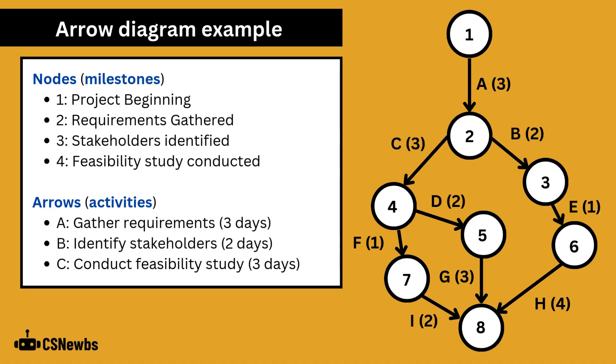The arrow diagram is good at showing which activities and milestones are dependent on others. For example we can't reach milestone 7 until we have reached milestones 1, 2 and 4 and the activities between those have been completed.